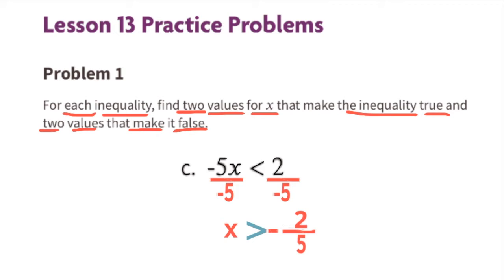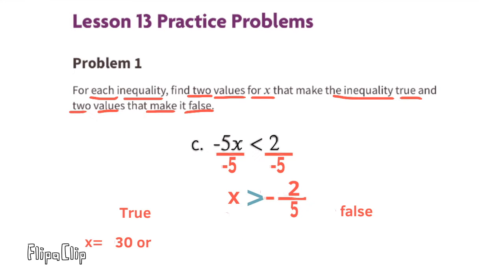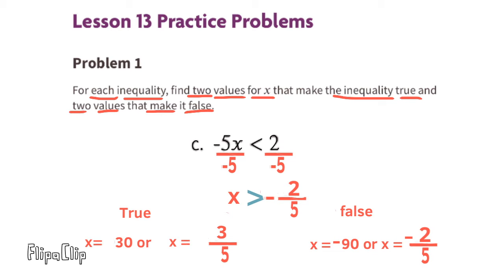So x is greater than negative 2 fifths. Values for x that would make this inequality true would be any value greater than negative 2 fifths — for example, x could equal 30 or x could equal 3 fifths. Values that make it false would be any values not greater than negative 2 fifths — for example, x could be negative 90 or x could equal negative 2 fifths, because negative 2 fifths is not greater than negative 2 fifths.